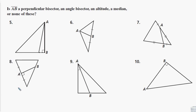All right, here are some example problems for identifying segments within triangles. We need to identify which of these things each of these lines in each of these triangles are: perpendicular bisector, angle bisector, altitude, median, or none of these.